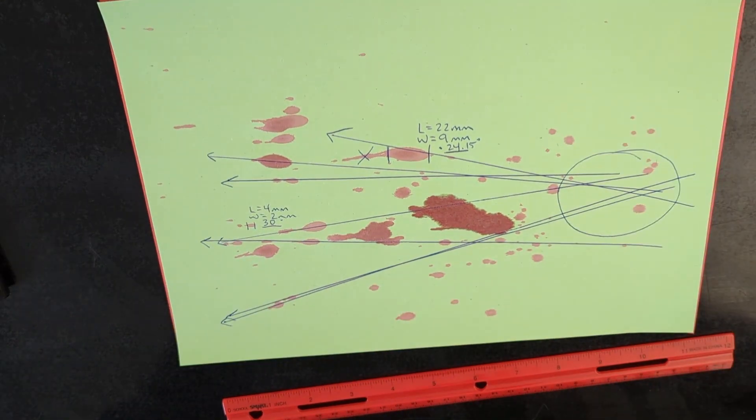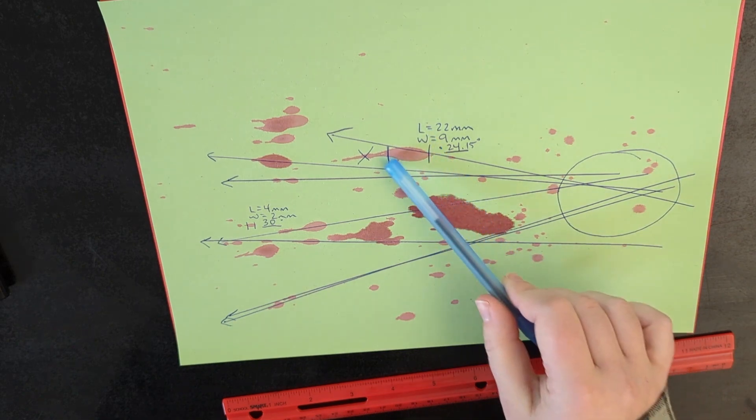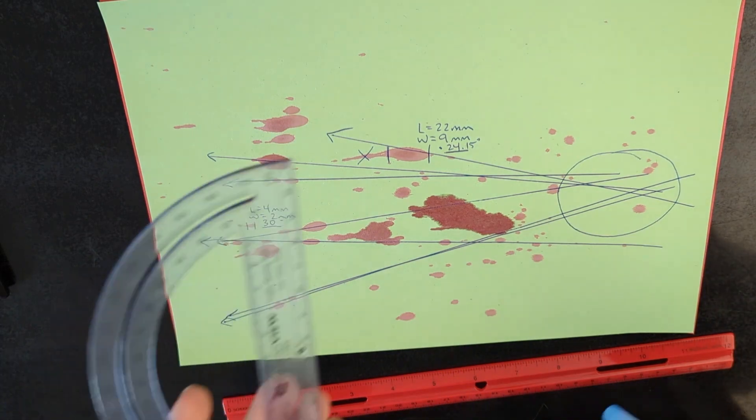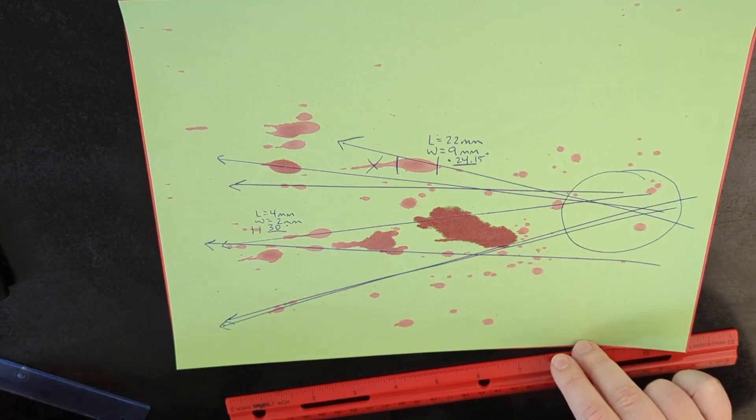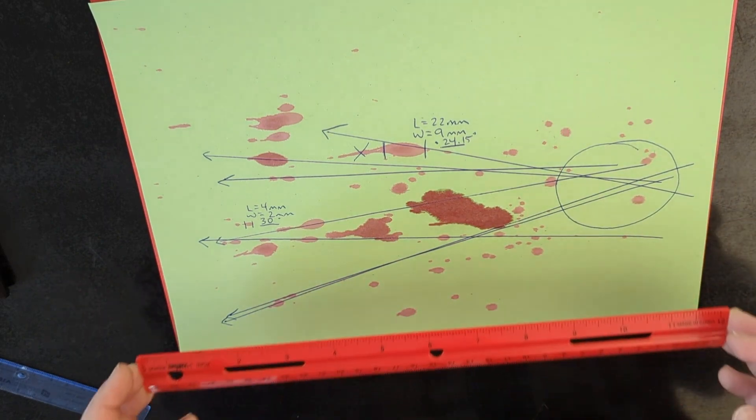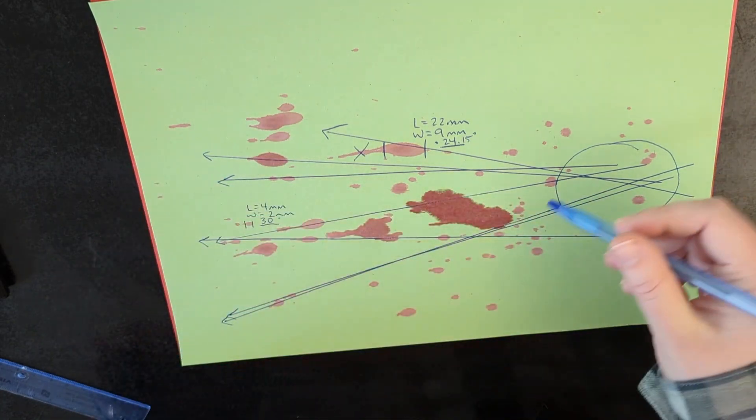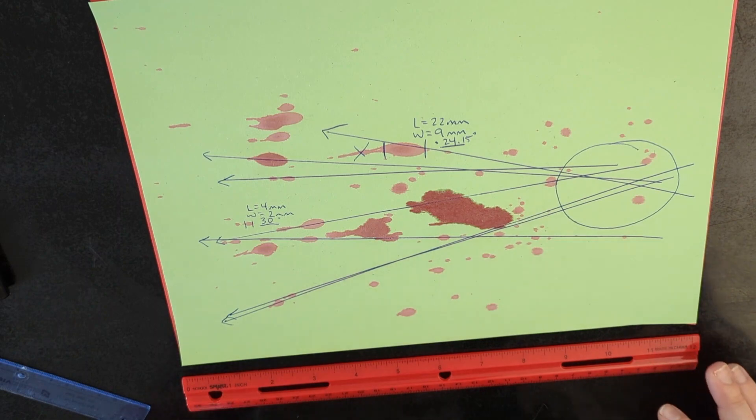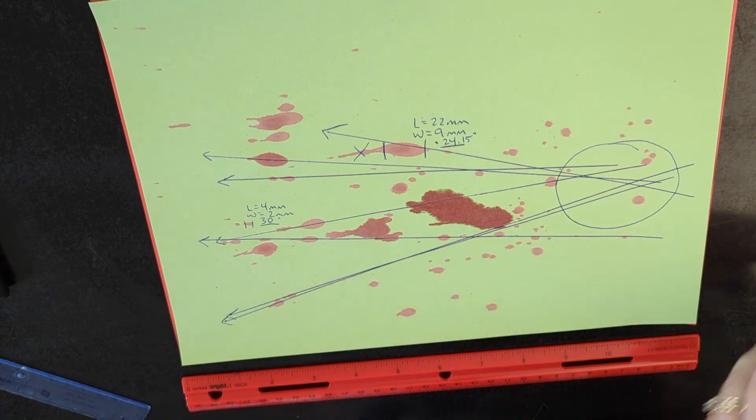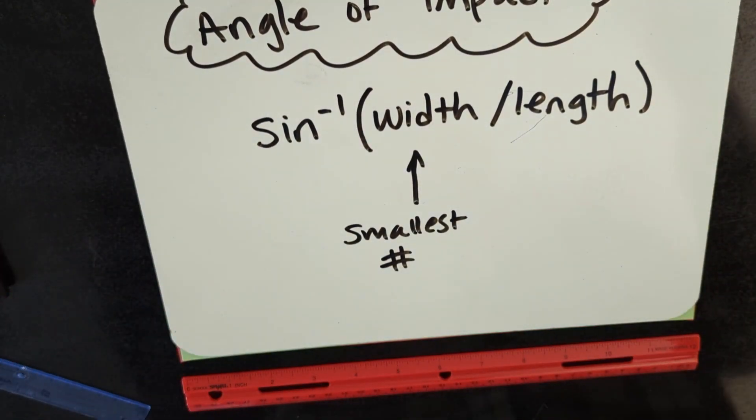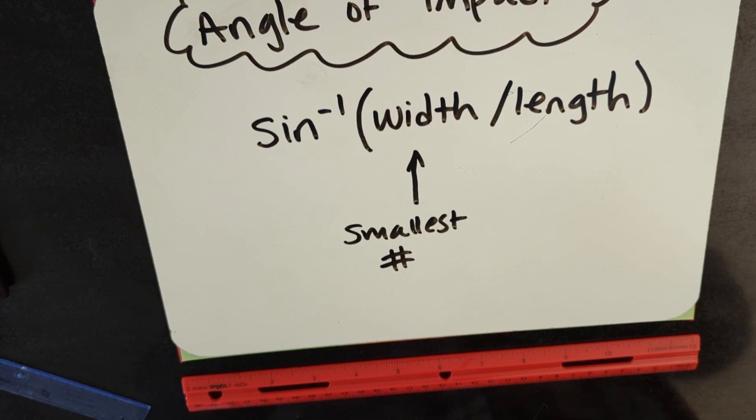By the end of this video, you should understand how to measure the length and width of each blood drop using a protractor. You should also know what direction blood is moving based on the tails. And you should also know how to find the lines of convergence and thus the point of origin. Feel free to watch this video as many times as you need. And as always, I'm here if you have any questions. Here is the angle of impact equation. And we got this guys. We are forensic scientists!